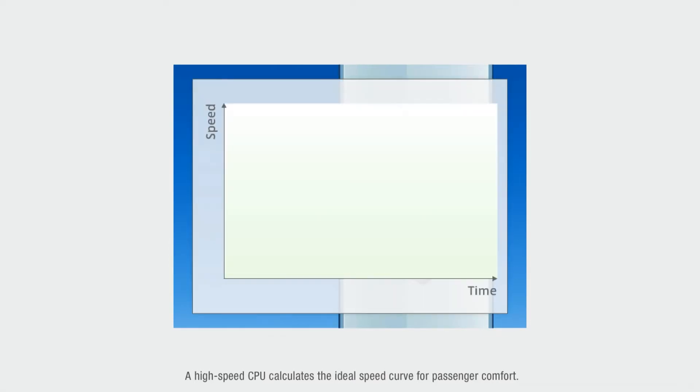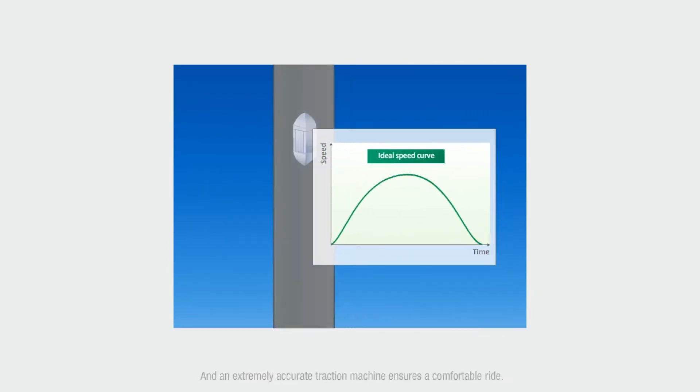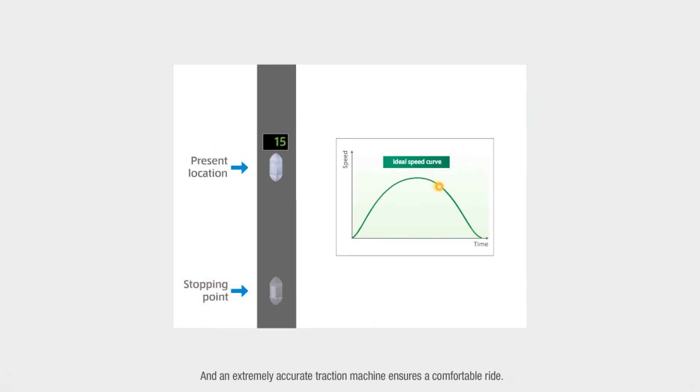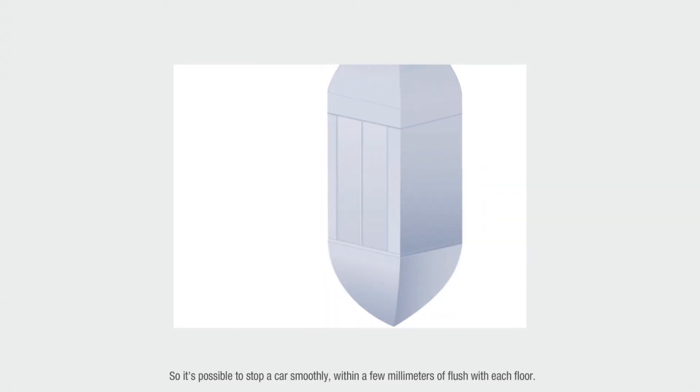A high-speed CPU calculates the ideal speed curve for passenger comfort. And an extremely accurate traction machine ensures a comfortable ride, so it's possible to stop a car smoothly within a few millimeters of flush with each floor.